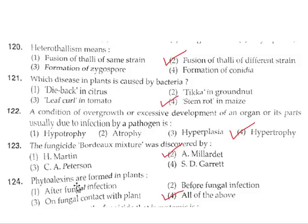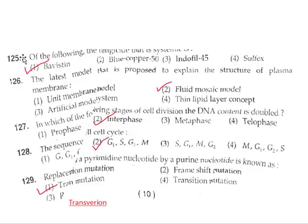Question 124: Phytoalexins are formed in plants after fungal infection, before fungal infection, and on fungal contact with the plant. The correct answer is all of the above. Question 125: The systemic fungicide among the options is Bavistin. Option 1.